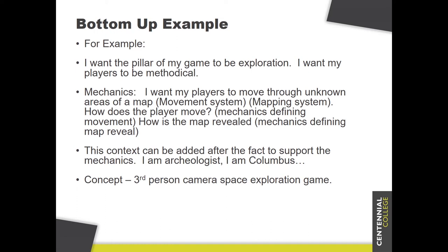For example, if the pillar of your game is exploration and you want players to be very methodical about it, your mechanics will allow players to move through hidden or disguised areas of a map. That defines several things: a movement system, a mapping system. Once you understand you have a movement system, you define the player's movement mechanics. You also have to understand how the map is revealed — if it's all shown at once, that wrecks exploration since the player can see everything. So how are different areas revealed? Finally, you can add context: I'm an archaeologist, or I'm Christopher Columbus — something that lets you utilize those mechanics. So you get something like a third-person space exploration game, or an archaeologist discovering ancient civilizations as they move through an undefined map. That's going from the bottom up, from general ideas into the very specific.